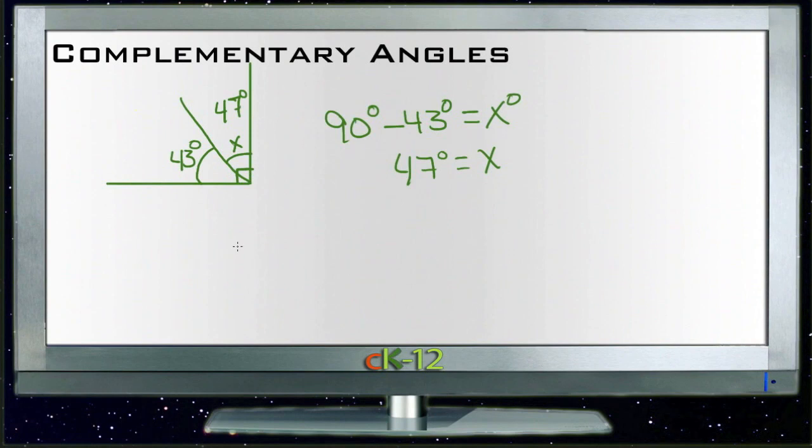Complementary comes first, it's 90. Supplementary comes later, it's a bigger letter if you like, so it's 180.